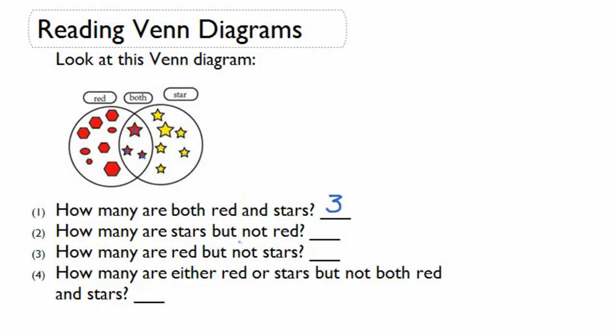How many are stars but not red? Here we're going to look just in this section where we're looking at stars but not counting the overlap of red stars. So we have one, two, three, four, five, six. We have six stars that are not red.